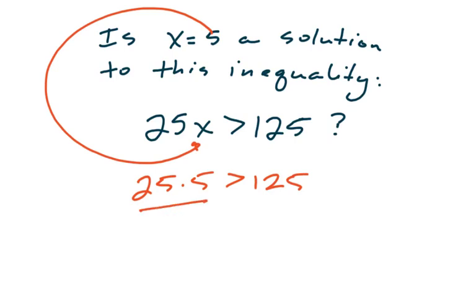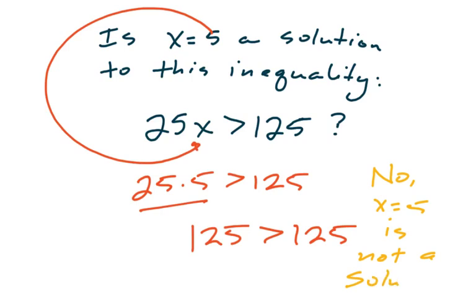Well, last time I checked, 25 times 5 is 125. So here's your question. Is 125 greater than 125? And it's not. So our answer on this one is no, x equals 5 is not a solution. This one doesn't work in this inequality. So we'll say no.